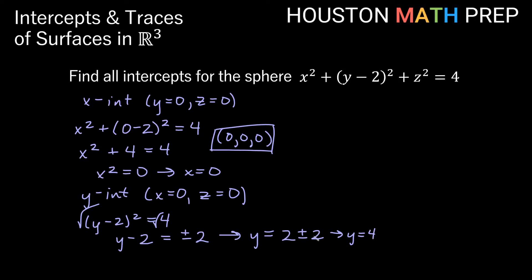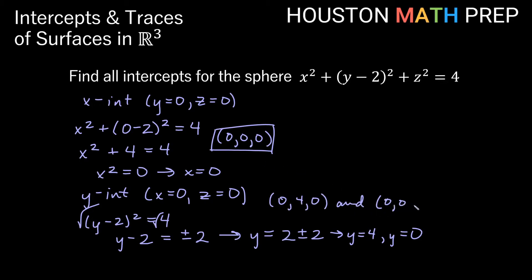And 2 minus 2 gives y equals 0. So we actually get two y-intercepts: one where y is 4 and one where y is 0, with x and z both 0. That gives us the points (0, 4, 0) and (0, 0, 0), the origin. So we have two y-intercepts for our sphere.